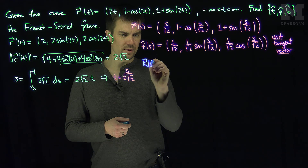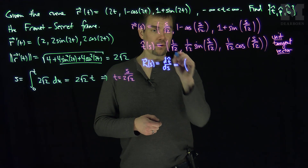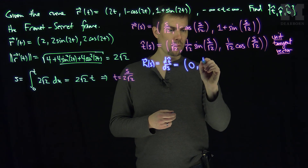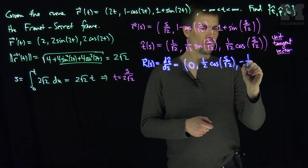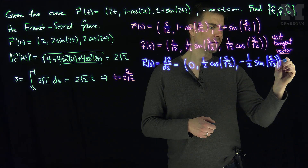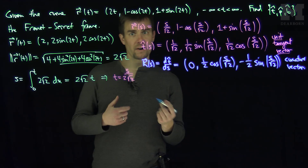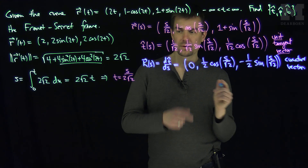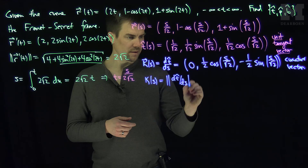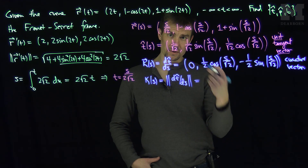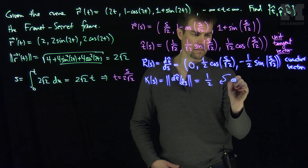The derivative of the unit tangent vector is the curvature vector. The derivative of 1/√2 is 0. The derivative of (1/√2)sin(s/√2) gives (1/2)cos(s/√2), since √2 · √2 = 2. And the derivative of (1/√2)cos(s/√2) gives −(1/2)sin(s/√2). The length of this curvature vector is the scalar curvature. We can see this traces a circle with radius 1/2, so the curvature κ = √((1/2)² + (1/2)²) = 1/2. So we have constant curvature.